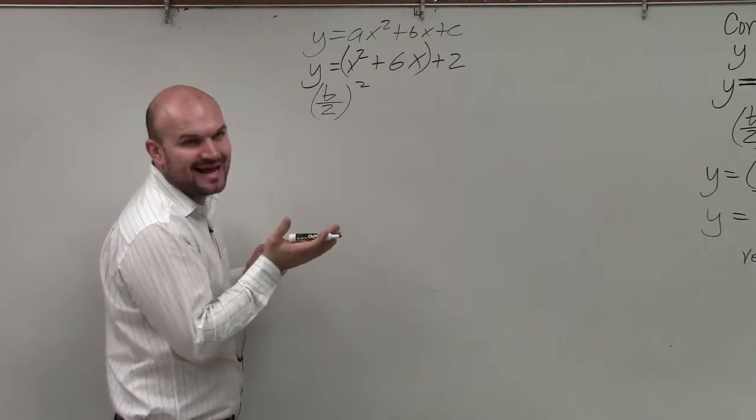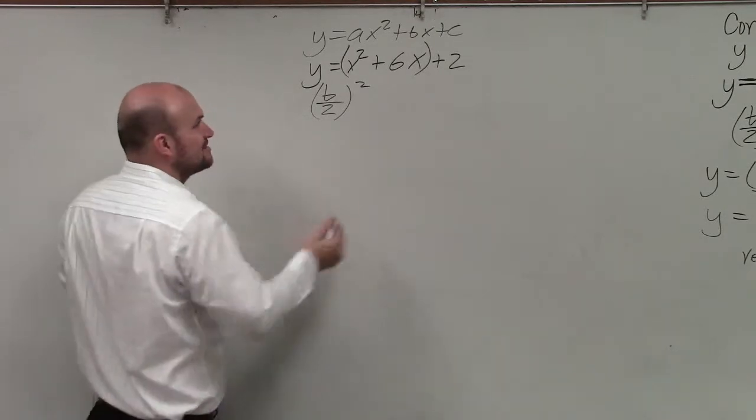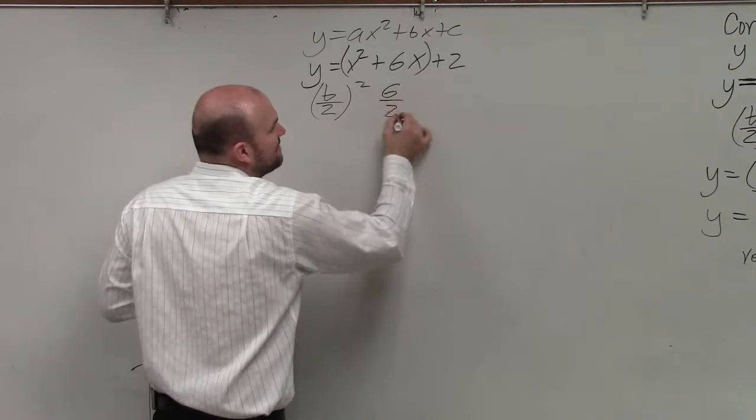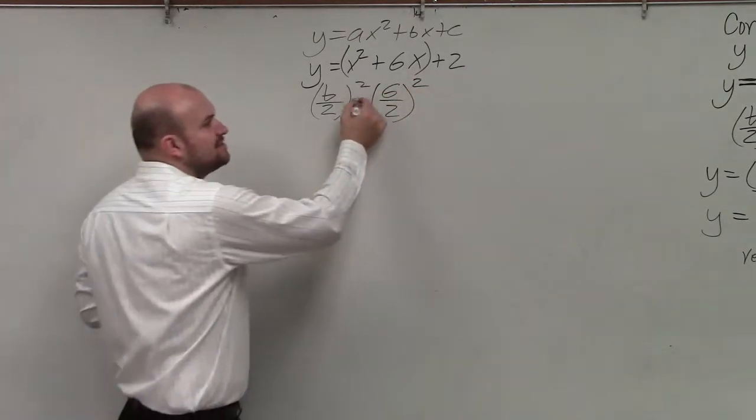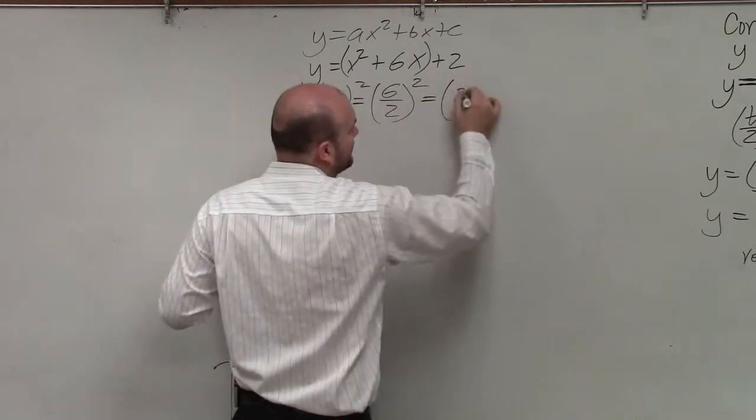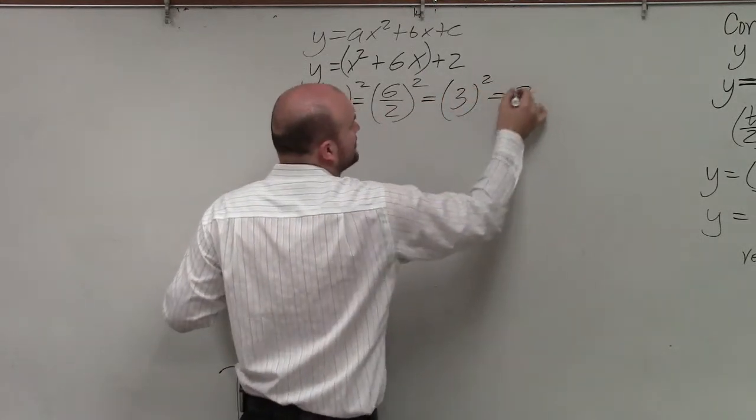Notice how I said that in order of the operations. So you take 6, divide it by 2, and then square it. 6 divided by 2 is 3 squared, which is 9.